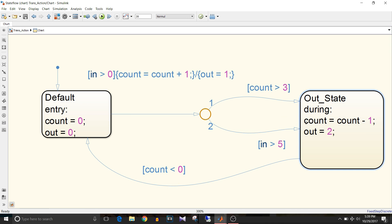That's how the transition action works. Once the out state becomes active, unless and until count less than 0 becomes true, it will remain in out state. There is no entry action for this state, but the during action will be executed as long as it is in out state.